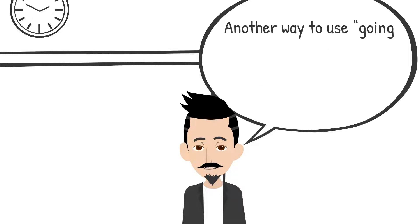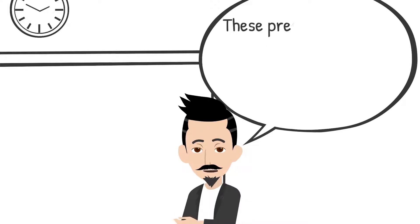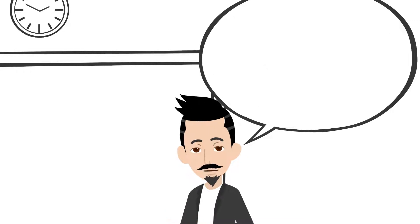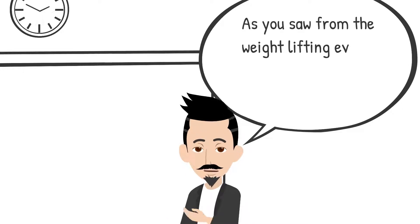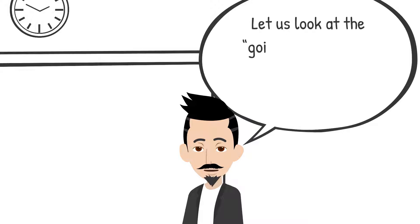Another way to use going to is to make a prediction with the evidence available at the current moment. These predictions do not have to come true as they are just personal beliefs at the current time. As you saw from the weightlifting event, Joe was able to win the competition. Let us look at the going to example I used to predict in that situation.